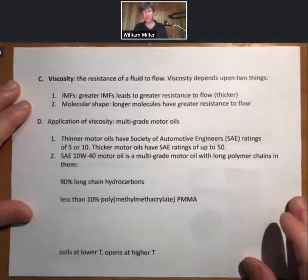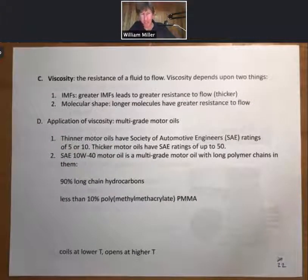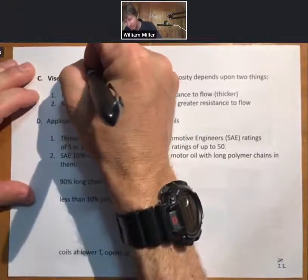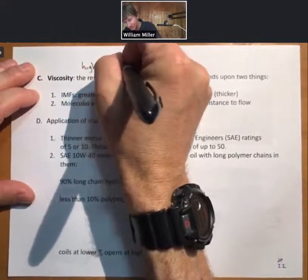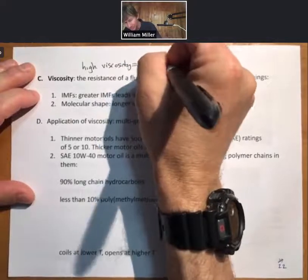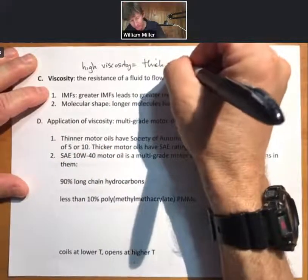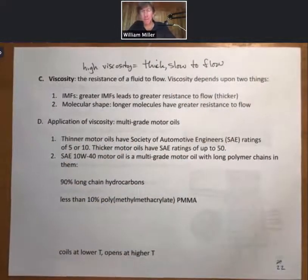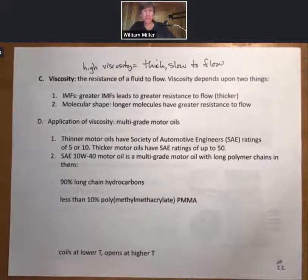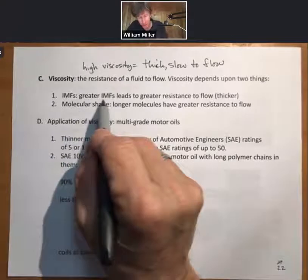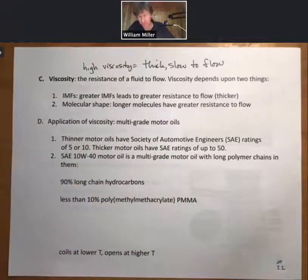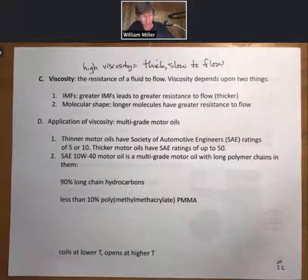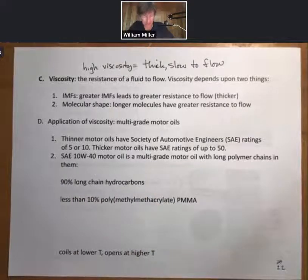Another interesting property is viscosity, the resistance of a fluid to flow. High viscosity means thick substances or slow-to-flow substances. Maple syrup is one example. Oil is thicker than water. Greater IMFs lead to greater resistance to flow, so thicker. And longer molecules have greater resistance to flow as well.